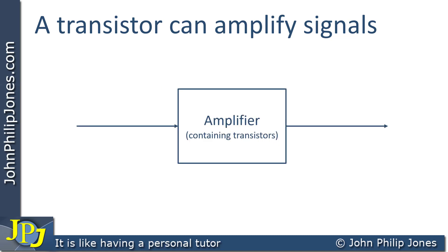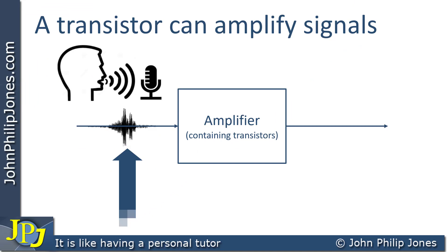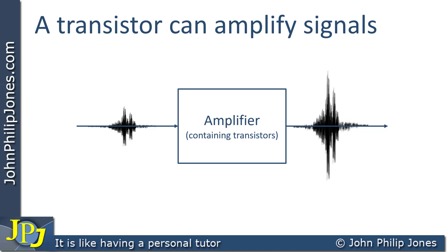Here you can see a schematic diagram representing an amplifier. The amplifier will have a signal in. A typical signal will be somebody's voice, and this shape here is showing an envelope of somebody's speaking. This will be picked up by a microphone, and you might want it to sound louder when it's played back. Looking at the signal out from the amplifier, you can see the envelope of the voice appearing at the output, and it is much bigger.